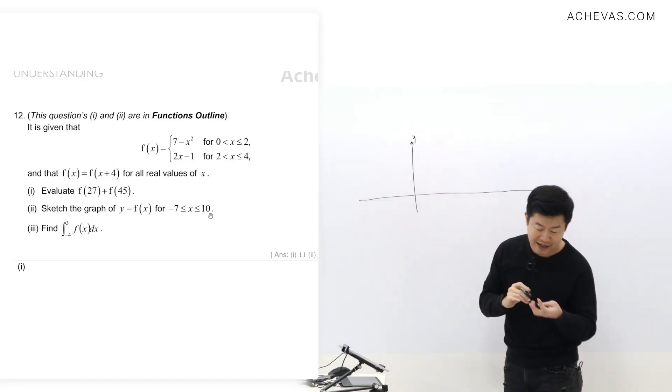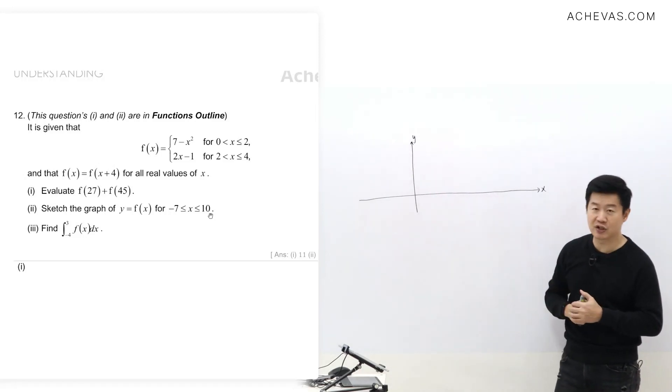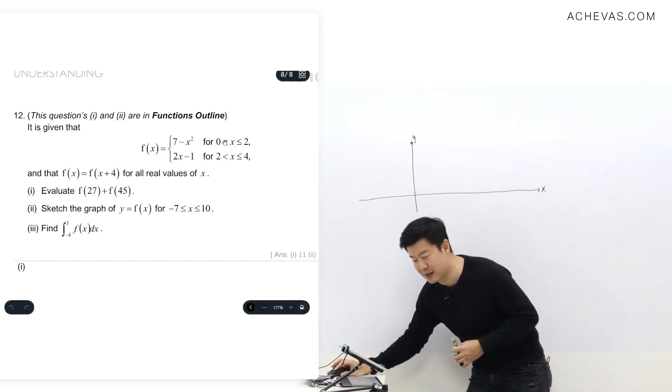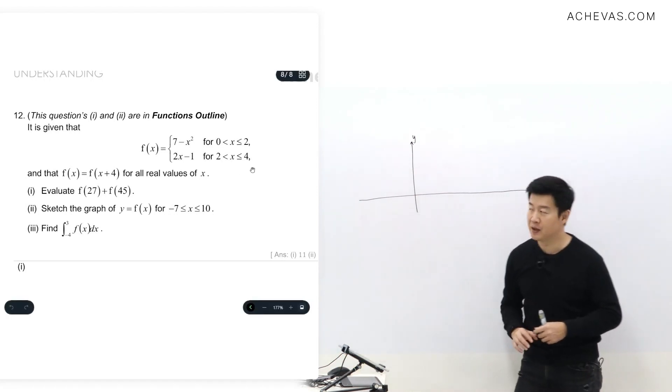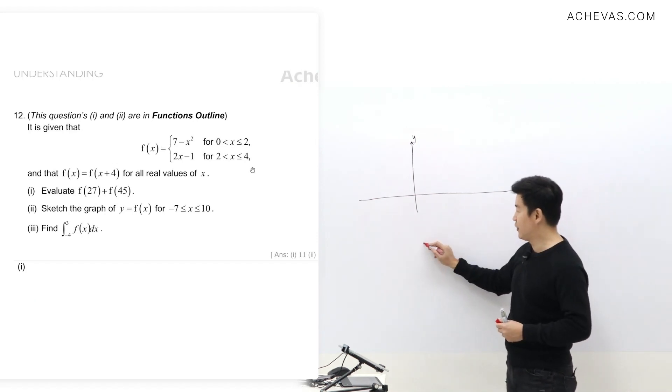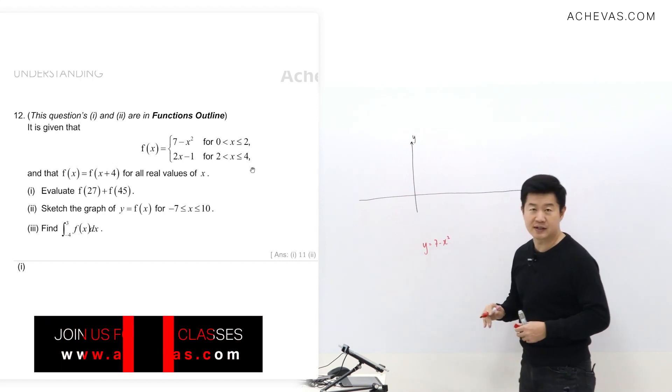Let me show you how I will sketch a piecewise function like this. I'm going to start sketching what I can first, which is from zero to four. So what I'll do is sketch the graph of y equals seven minus x squared first.